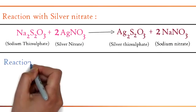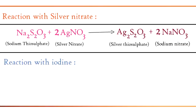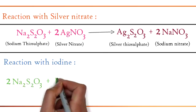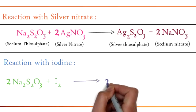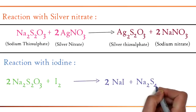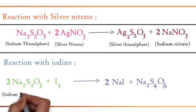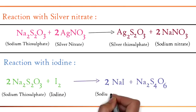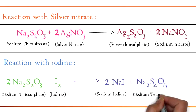At last, reaction with iodine. 2Na2S2O3 + I2 → 2NaI + Na2S4O6. Sodium thiosulfate reacts with iodine to give sodium iodide and sodium tetrathionate.